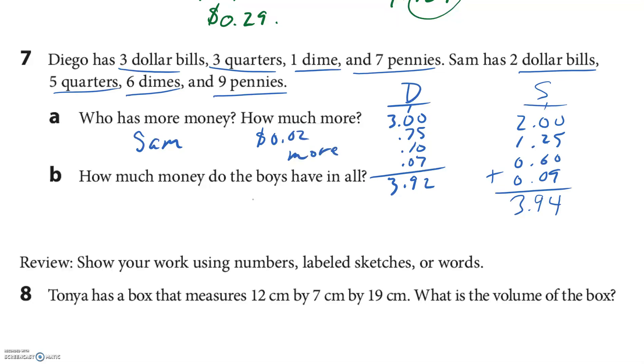So not much more. How much do they have in all? So let's just add them up. 392 plus 394. I got a six. I have an 18. Bring the decimal straight down. Carry the one. 786 is what they have in all.